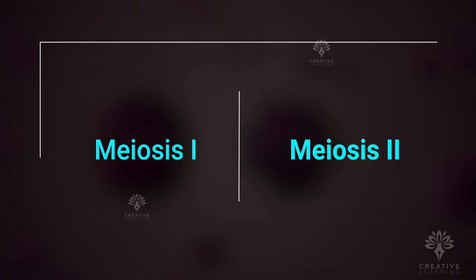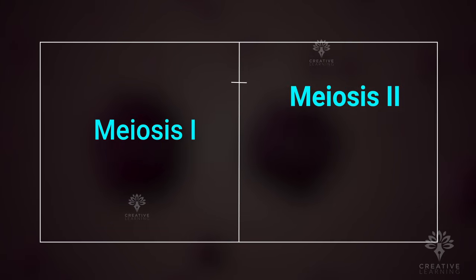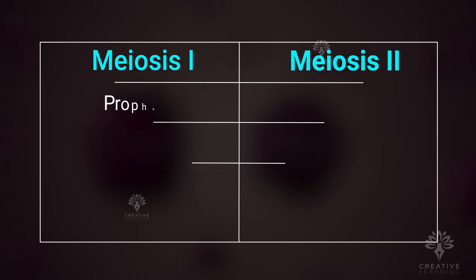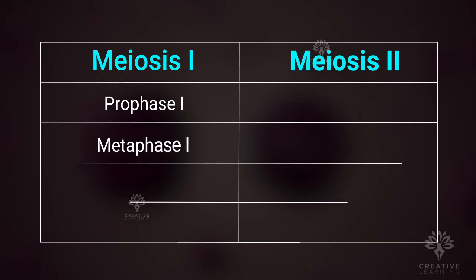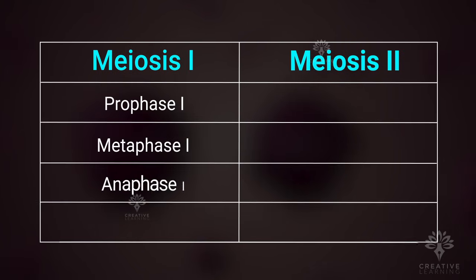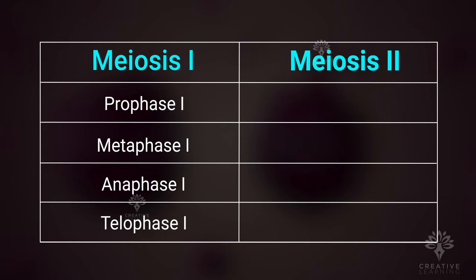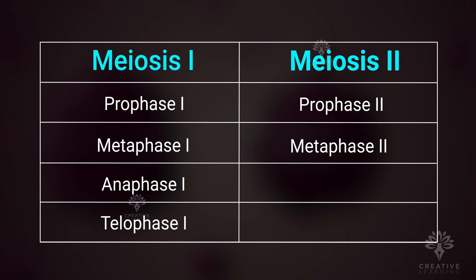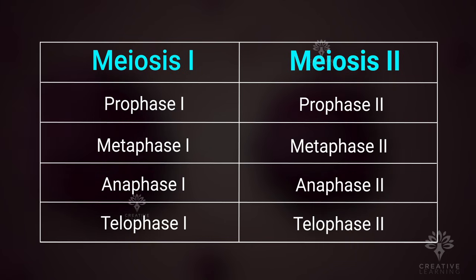There are four phases in meiosis I: prophase I, metaphase I, anaphase I, and telophase I. Additionally, there are four phases in meiosis II: prophase II, metaphase II, anaphase II, and telophase II.